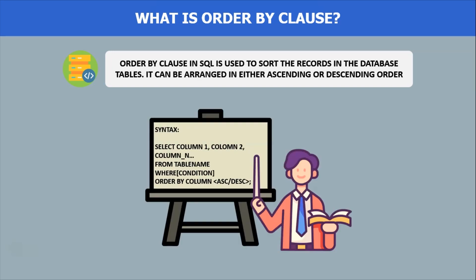Let us now understand the syntax of the SQL ORDER BY clause. The syntax is: SELECT column1, column2, ... up to n columns FROM table_name WHERE condition ORDER BY column ASC or DESC. The column specified after the ORDER BY keyword is the column used to sort the data, and ASC represents ascending order while DESC represents descending order.